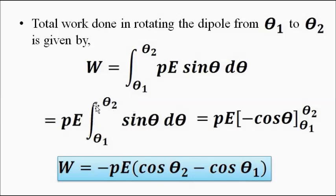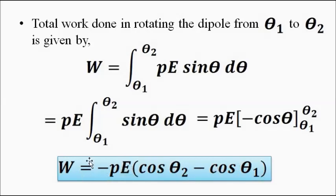The integration of sin theta is −cos theta, so the total work becomes W = pE [−cos theta] evaluated from θ₁ to θ₂, which simplifies to W = −pE (cos θ₂ − cos θ₁), applying the rules of definite integration.